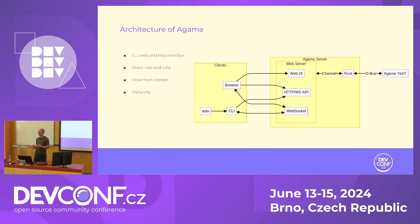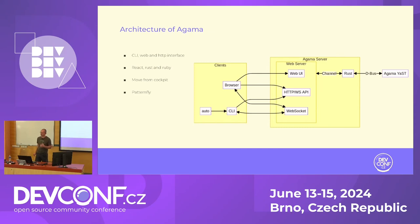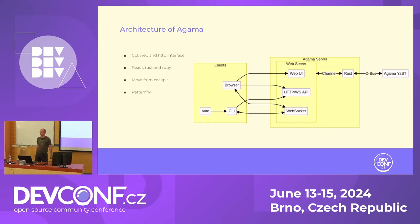What technologies are used? The oldest part is in Ruby. There's a large Rust part containing the HTTP server and providing sockets. Some parts of the logic that are easy to write from scratch use Rust because Rust is quite fast and has a nice asynchronous environment, unlike Ruby. For the web-based UI, we use React — basically because we started as a Cockpit plugin and Cockpit is in React. For web design, we use PatternFly components so it looks similar to Cockpit.